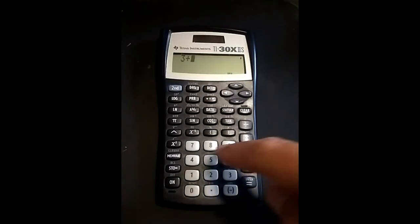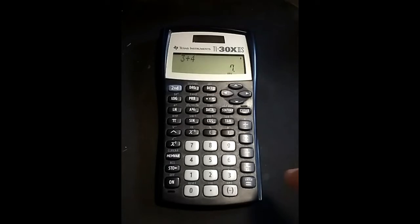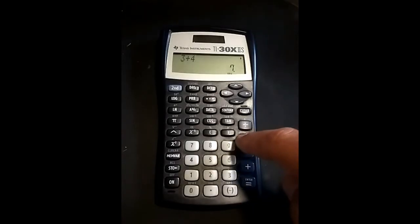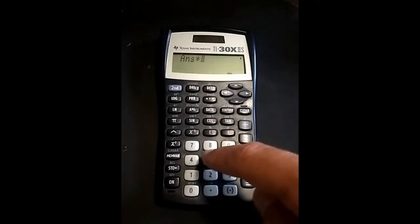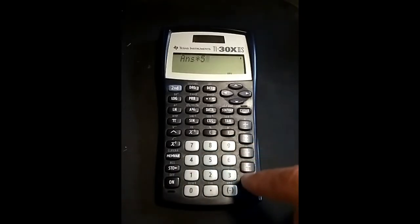Another way to do this is to enter 3 plus 4, then equals. Then hit the multiplication sign. The calculator remembers your last answer, and you can continue a calculation with that last saved number. Let's finish this one. So, we've said times, we've put in the 5, and equals again, 35.